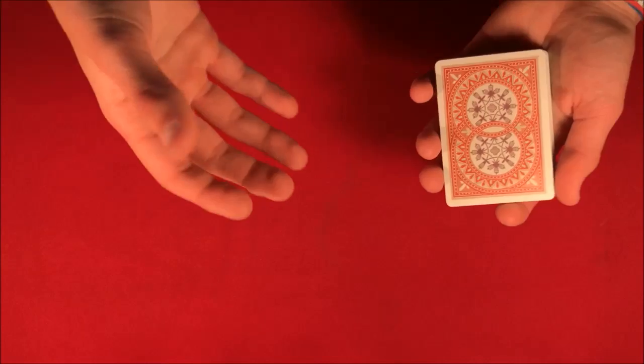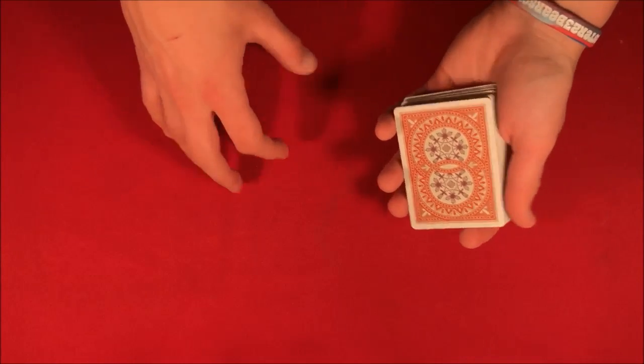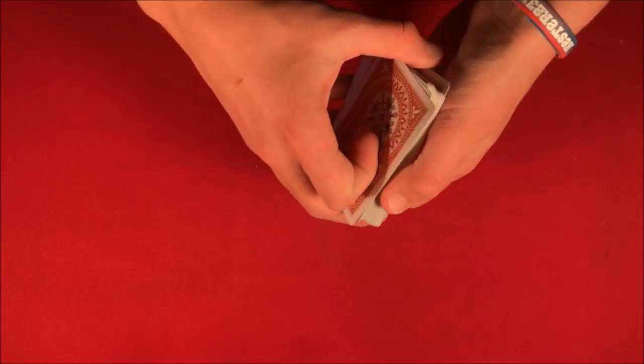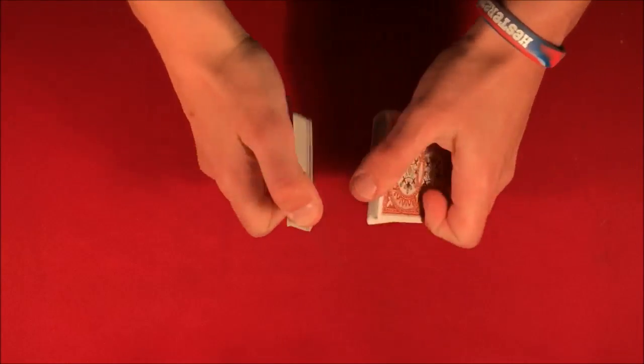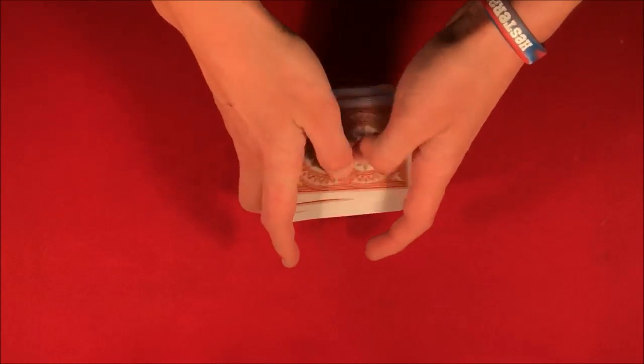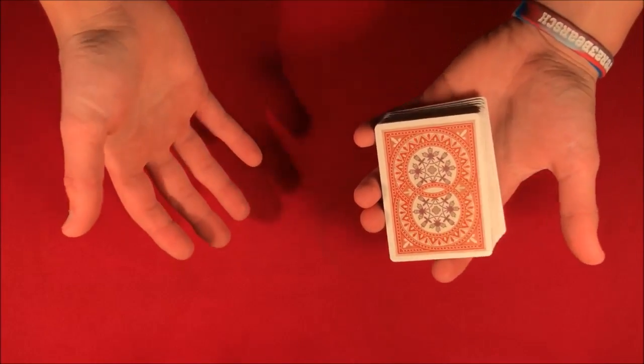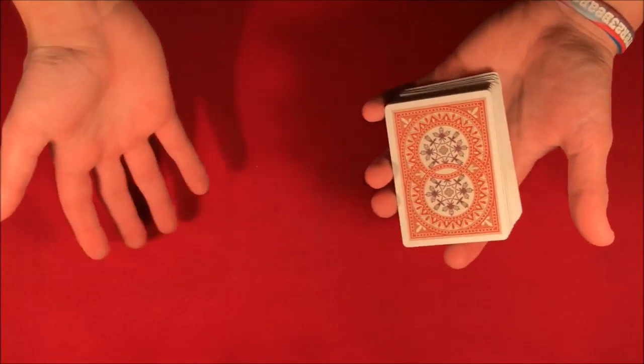This is a really old Penn and Teller routine. Basically, what Penn would do to start it off is have a spectator come up from the stage or from the audience. Penn could shuffle up the deck and then he would tell the spectator to pick a number between like five and ten.